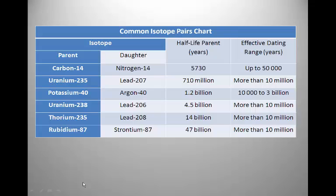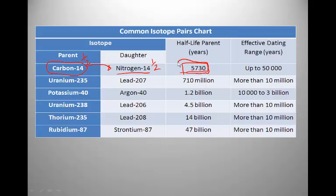Carbon comes in three different isotopes: carbon-12, carbon-13, and the radioactive isotope carbon-14, which is present in very minute quantities. Carbon-14 is unstable, and it decays to another element called nitrogen-14. It takes about 5,730 years for half of the carbon-14 to become nitrogen-14. We call this period of time, 5,730 years, the half-life of carbon-14.